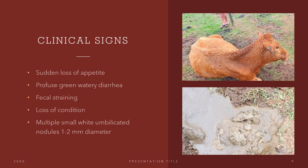What are the clinical signs? First, we have sudden loss of appetite. We also have profuse green watery diarrhea, as shown below. We have fecal straining, loss of condition, and multiple white umbilicated nodules from 1 to 2 mm in diameter.